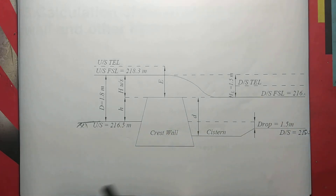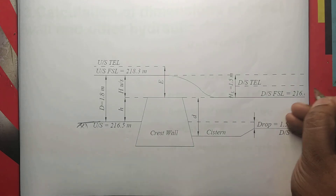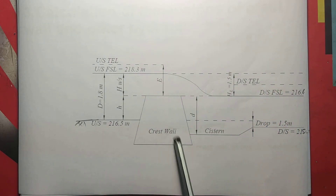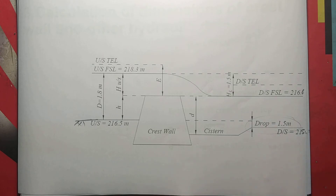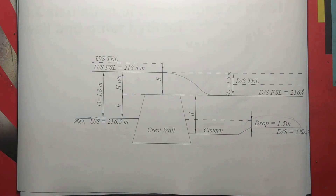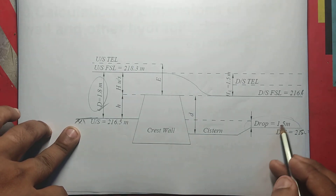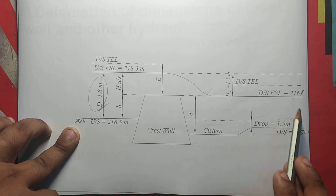Full supply level upstream is 218.3m. On the downstream side it is 216.8m. We've got a drop between the upstream bed level and downstream bed level. We've got the system here. The markings at 1.8 meters represent the water depth — capital D upstream and small d downstream — both are 1.8 meters.